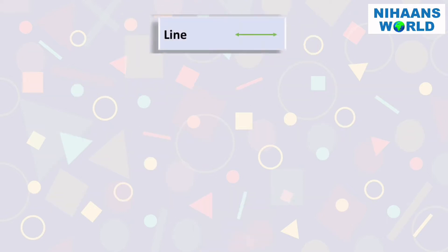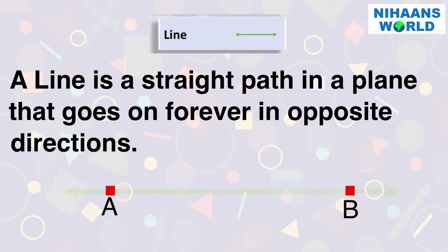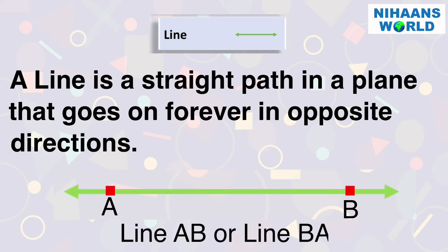What is a line? A line is a straight path in a plane that goes on forever in opposite directions. For example, line AB or line BA.